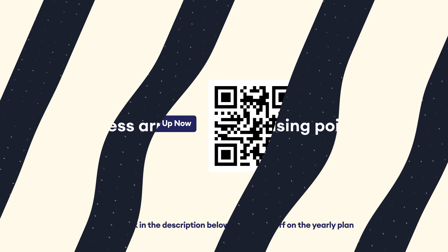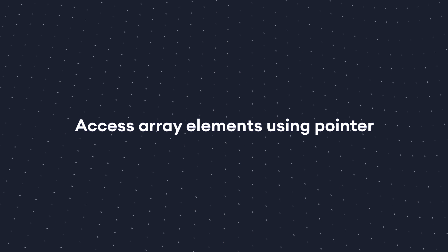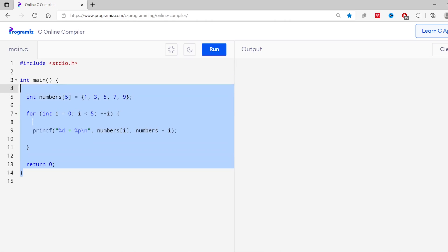In our last example we saw that for an array 'numbers', the name 'numbers' is a pointer that gives the address of the first element, and similarly numbers+i gives the address of the ith element. Now we can use this pointer to access the array elements — to access the first element we use *numbers, and similarly to access the ith element we use *(numbers+i).